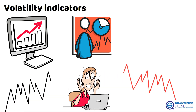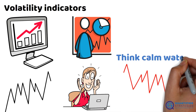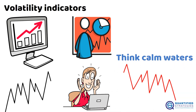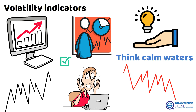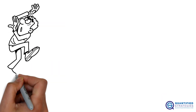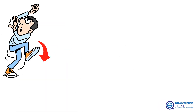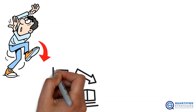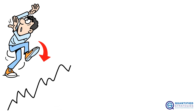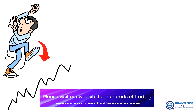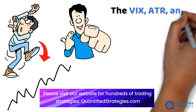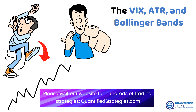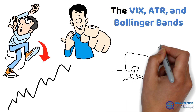Low volatility? Think calm waters. These indicators help you gauge market mood and spot potential opportunities. Typically, fear drives down prices and might create rebounds. Today we'll cover three big players: the VIX, ATR, and Bollinger Bands — each one gives you a unique edge in predicting market moves.